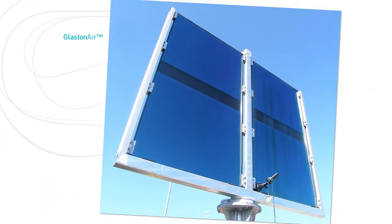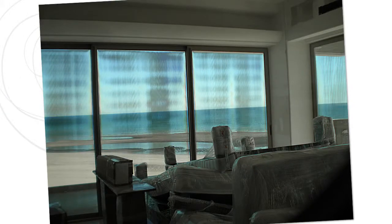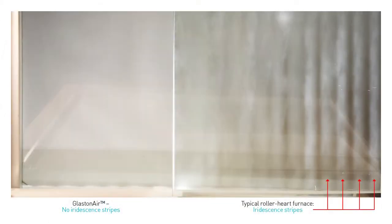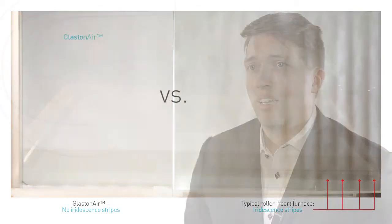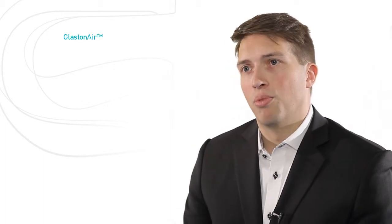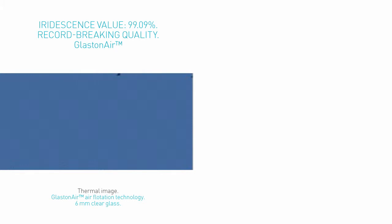Iridescence can be seen in different lighting conditions in the real world, but in a laboratory environment it can be examined with polarized light. The Glastonair glass includes practically no visible iridescence stripes. This is a huge step forward in glass tempering business and opens up new business opportunities for all Glastonair users.